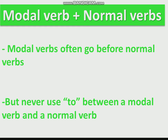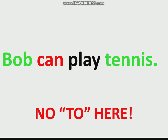For modal verb and normal verb combinations, modal verbs often go before normal verbs. But we never use 'to' between a modal verb and a normal verb. Never, never, never. For example: 'Bob can play tennis' — 'can' is a modal verb, 'play' is a normal verb, so no 'to' here. Can play.